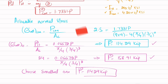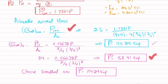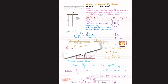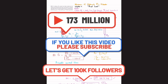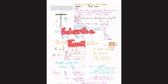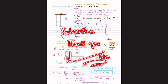We choose the smallest value because if we use 114.29 kips, the stress in the steel will be below its allowable limit, but using 158.91 kips would exceed the allowable stress in the concrete. Therefore, P = 114.29 kips is the maximum allowable floor loading. That was all about problem 4-35. I hope you enjoyed this video. Subscribe to the channel and press the bell icon for notifications. Ask any questions in the comments — thank you for watching.